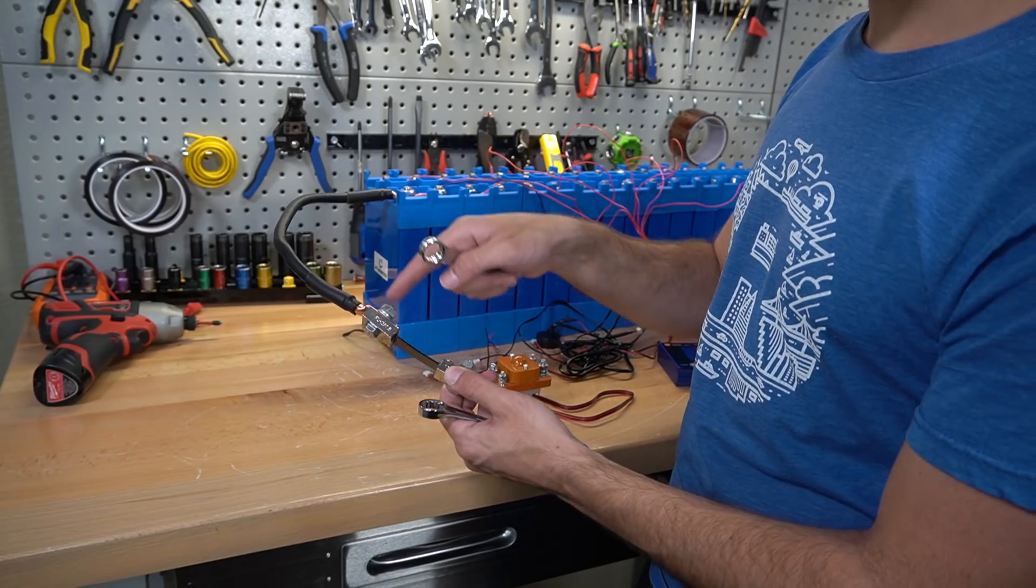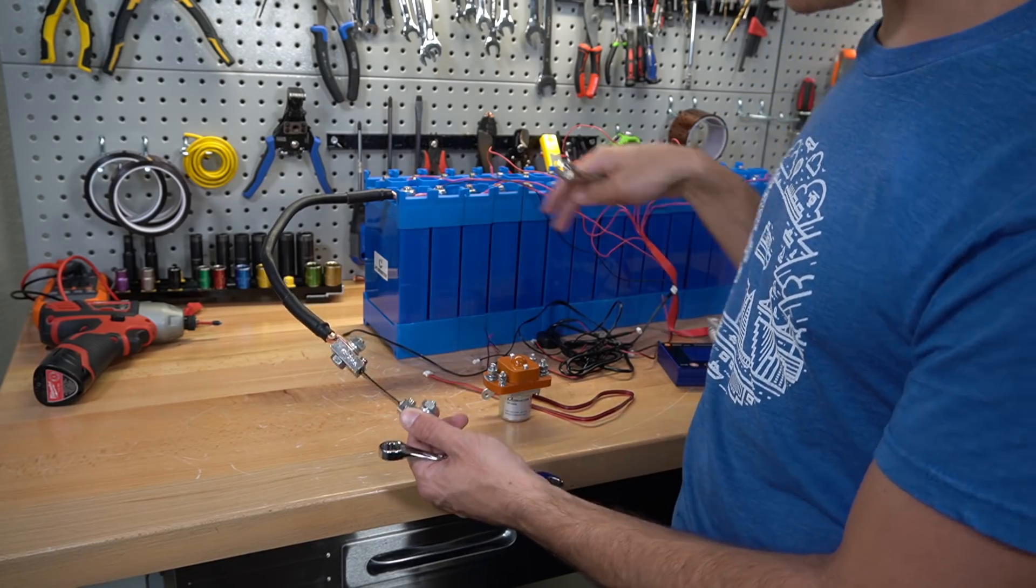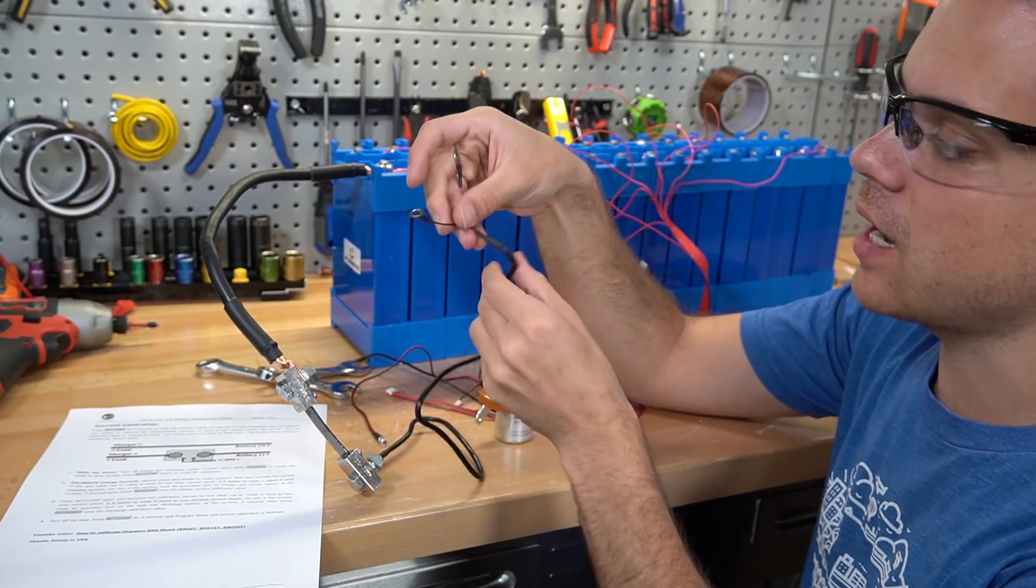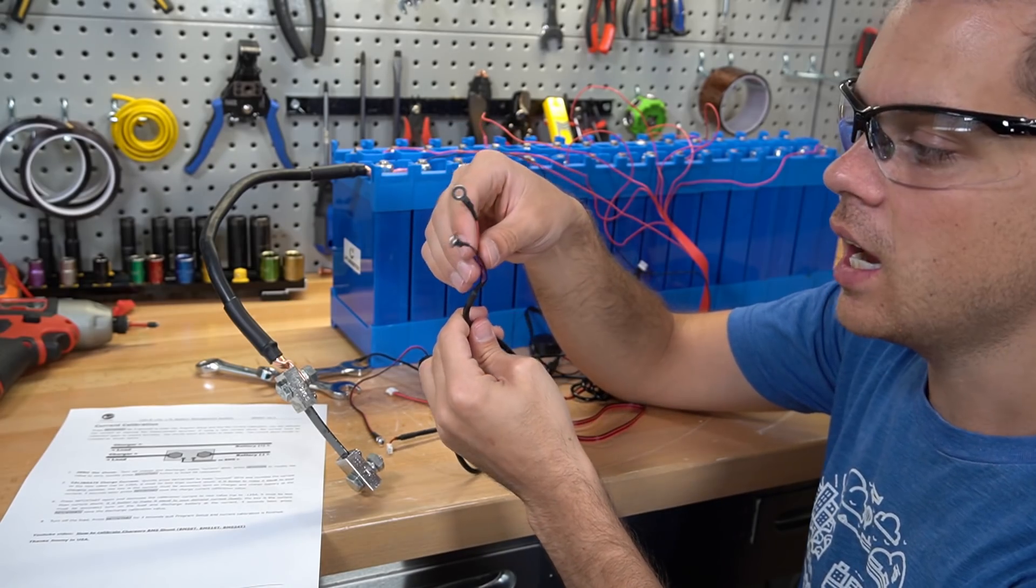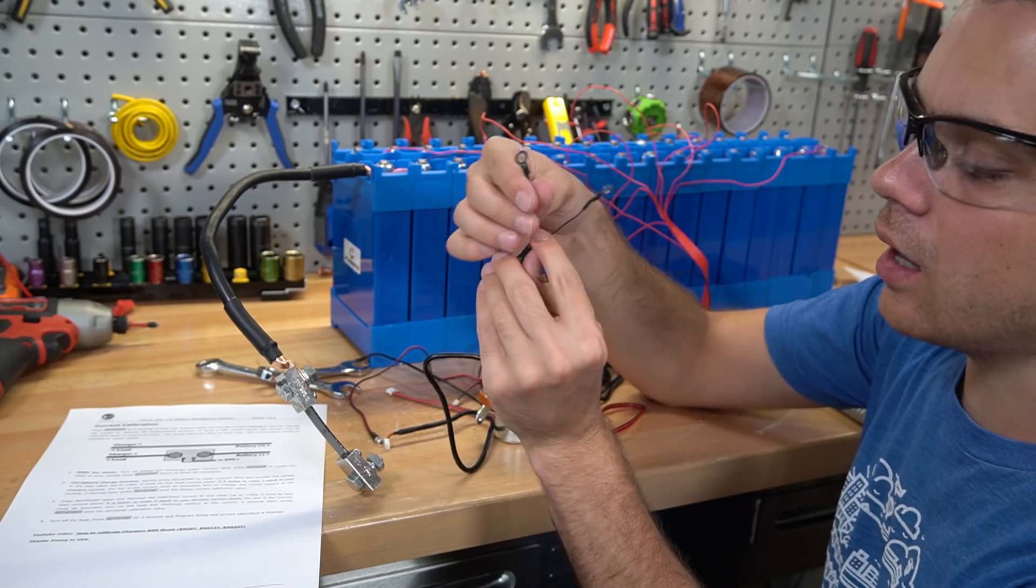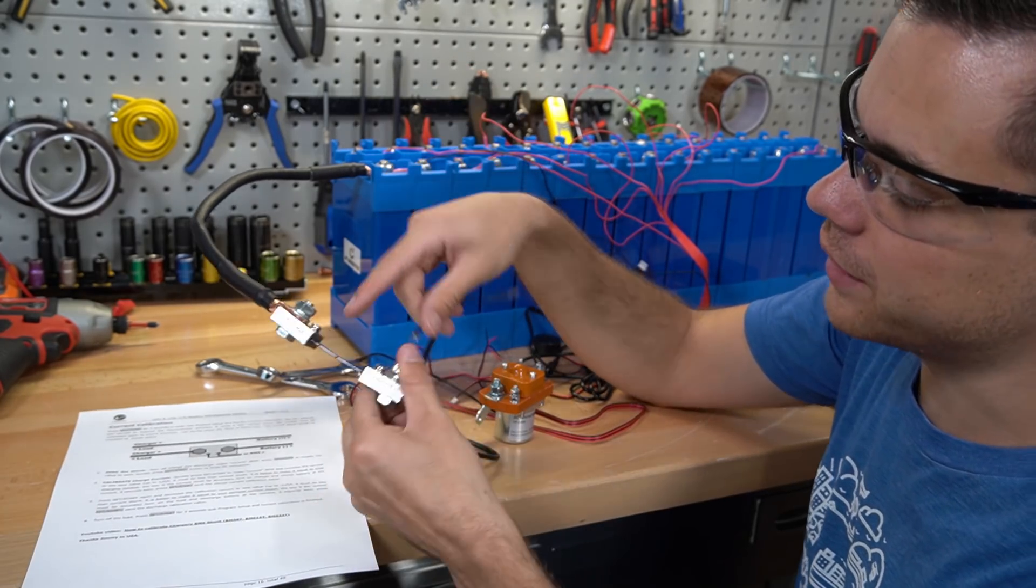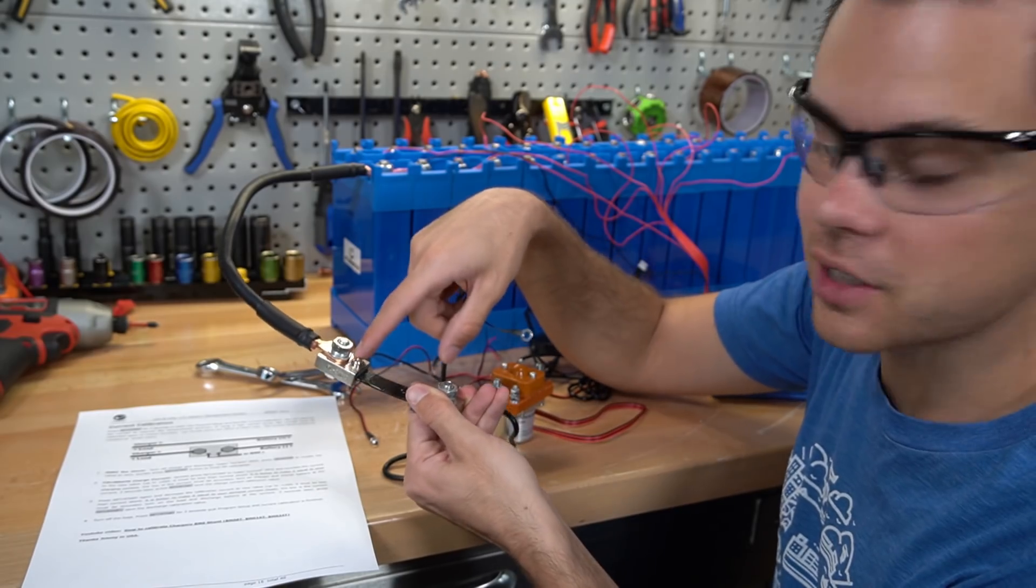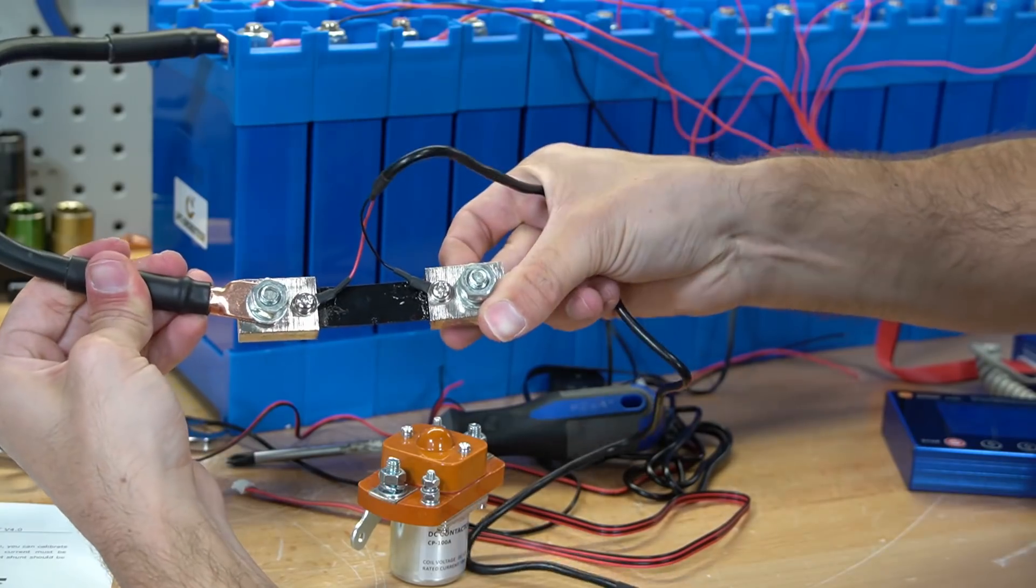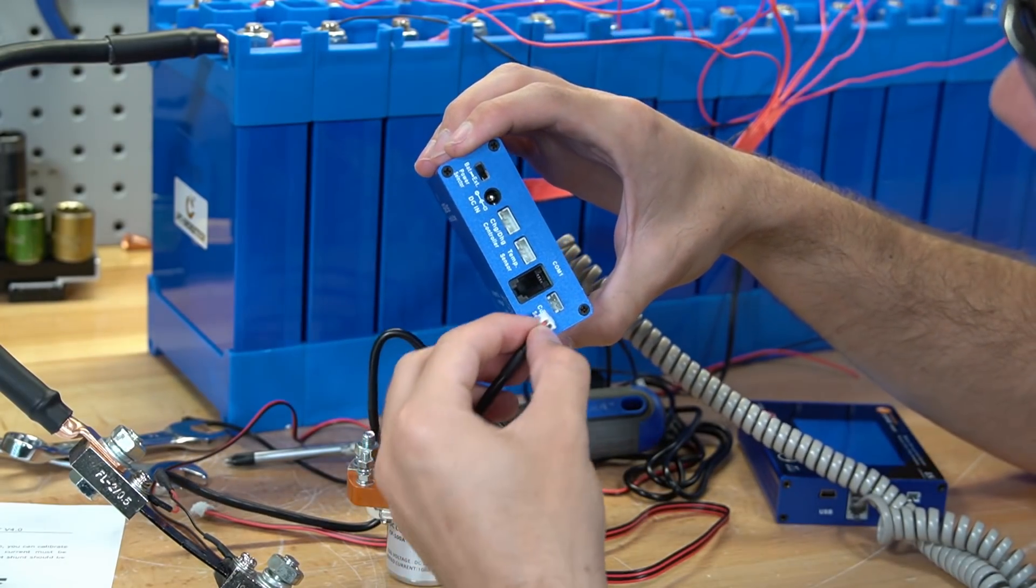Now the 100 amp shunt is connected to the main negative terminal. So we need to connect this shunt to the BMS. The cable that connects the shunt to the BMS actually has a positive and negative and these are polarity specific so you can't mess this up. The positive actually goes closer to the main battery negative. This is what it should look like when it's done. We're just going to plug this in to where it says current sensor.